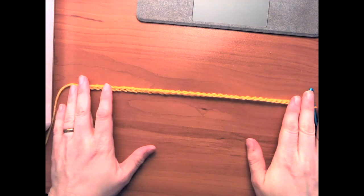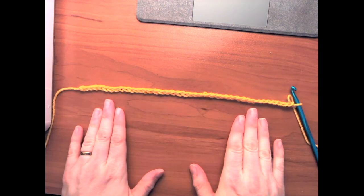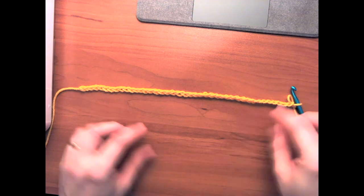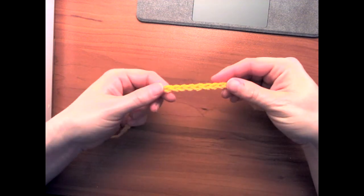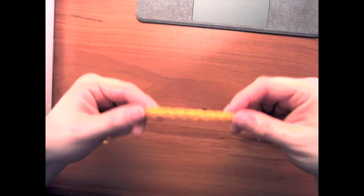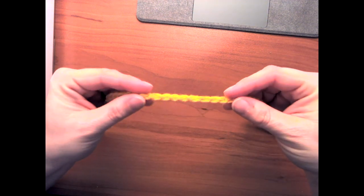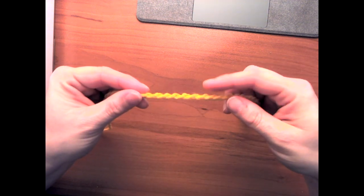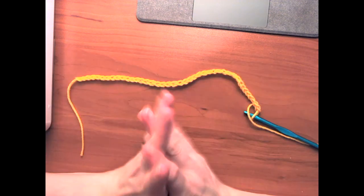All right, so here is a finished foundation. A chain of forty stitches. And you can see, it actually looks a lot like a braid, doesn't it? But when you look at the back of it, it's got these little bumps on it. That's where you would be putting your stitches.